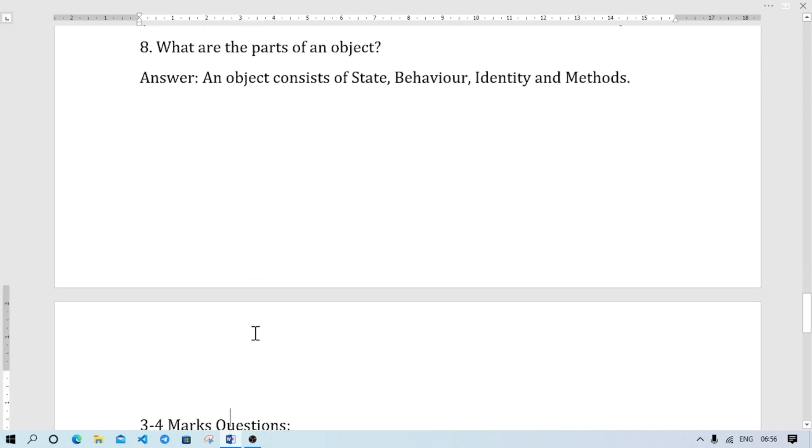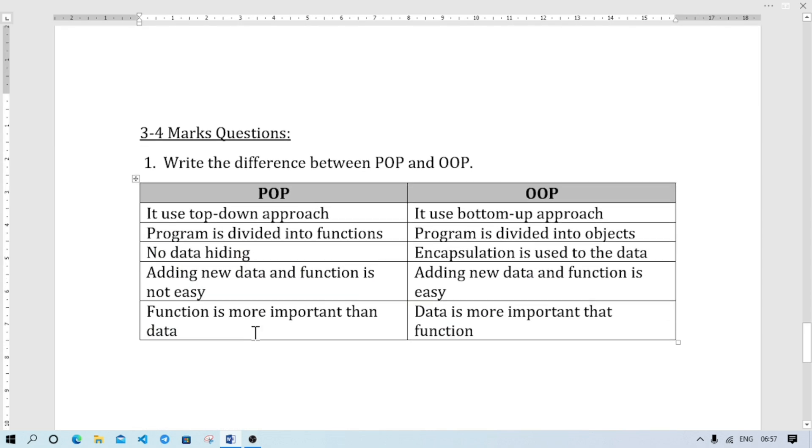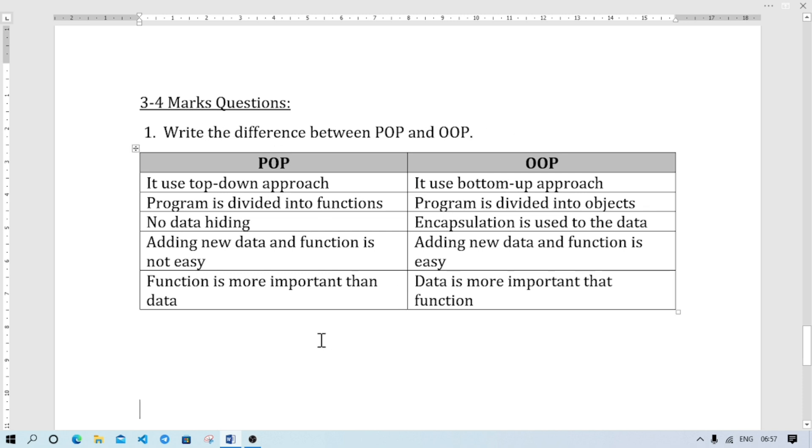Write the difference between POP and OOP. POP uses top-down approach, OOP uses bottom-up approach. Program is divided into functions in POP, program is divided into objects in OOP. No data hiding in POP, encapsulation is used to hide data in OOP. Adding new data or function is not easy in POP, in OOP adding new data or function is easy. In POP function is more important than data, in OOP data is more important than function. If you learn the advantages and features, you can answer the question.